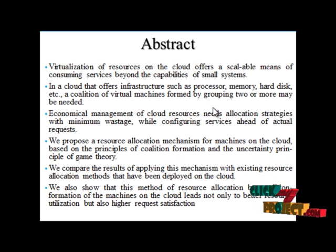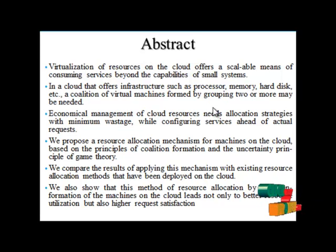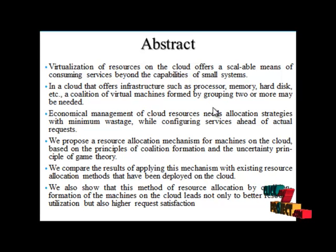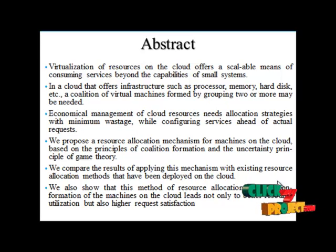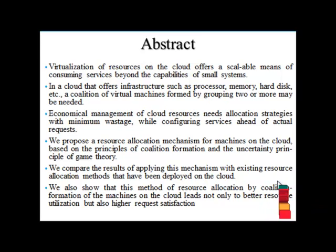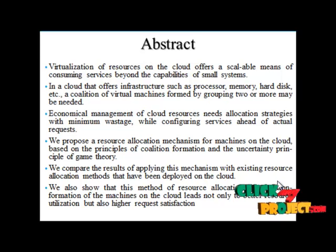The abstract: virtualization of resources on the cloud offers a scalable means of consuming services beyond the capability of a small system. In a cloud that offers infrastructures such as processor, memory, hard disk, etc., regulation of virtual machines is formed by grouping two or more as needed. Economical management of cloud resources needs allocation strategies with minimum wastage. We propose a resource allocation mechanism for machines on the cloud based upon the principle of coalition formation and the uncertainty principle of game theory.